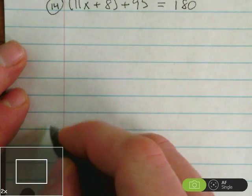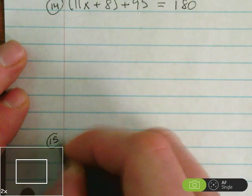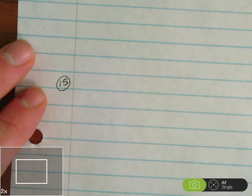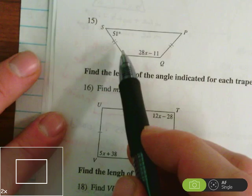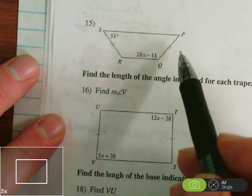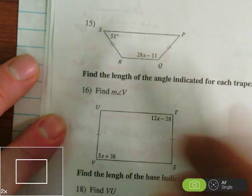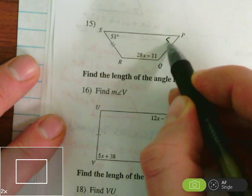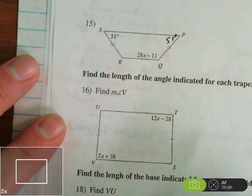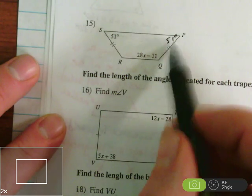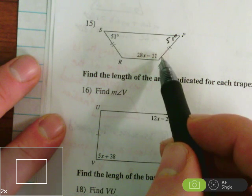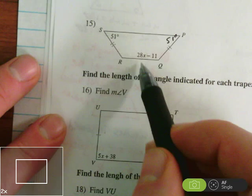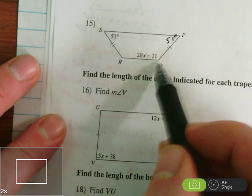So we have 11x plus 8 plus 95 equals 180. Let's take a look at number 15. Here we have another isosceles trapezoid. You can tell because the legs are congruent. Which means that this is 51 degrees, which means that this other base angle is also 51 degrees. And these two angles are at either end of a leg. So they're supplementary.